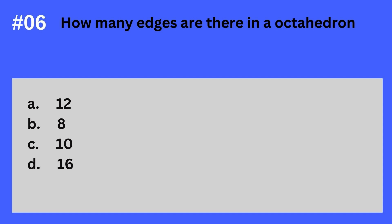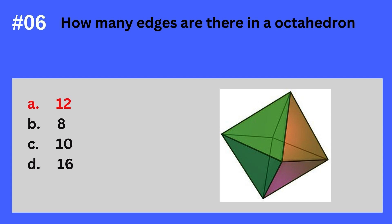Question 6. How many edges are there in an octahedron? A. 12. B. 8. C. 10. D. 16. The answer? It's A. 12. Remember that an octahedron has 12 edges and 8 plain faces.